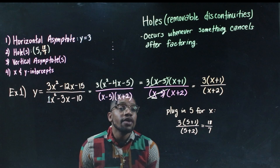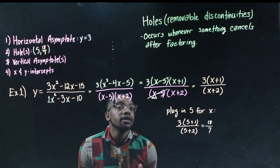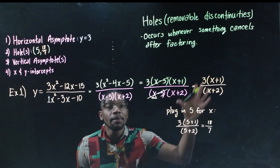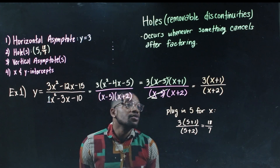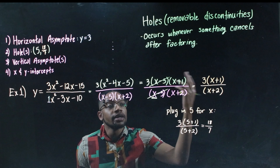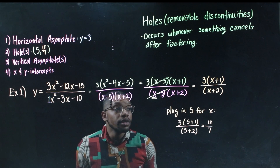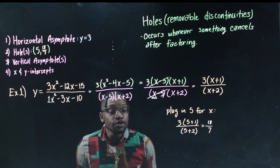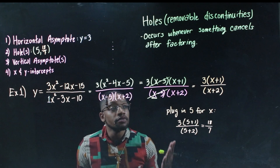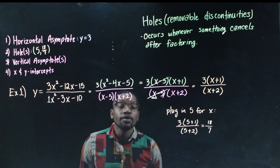Finding the vertical asymptote is easy — it's whatever x value makes the denominator of the simplified function equal zero. Looking at the denominator, if x equals negative 2, then negative 2 plus 2 gives zero. So my vertical asymptote is x equals negative 2.